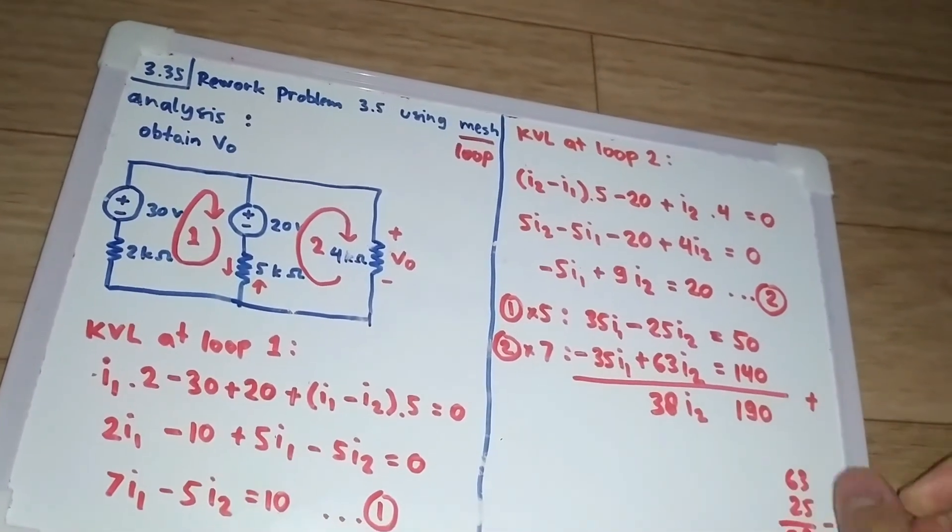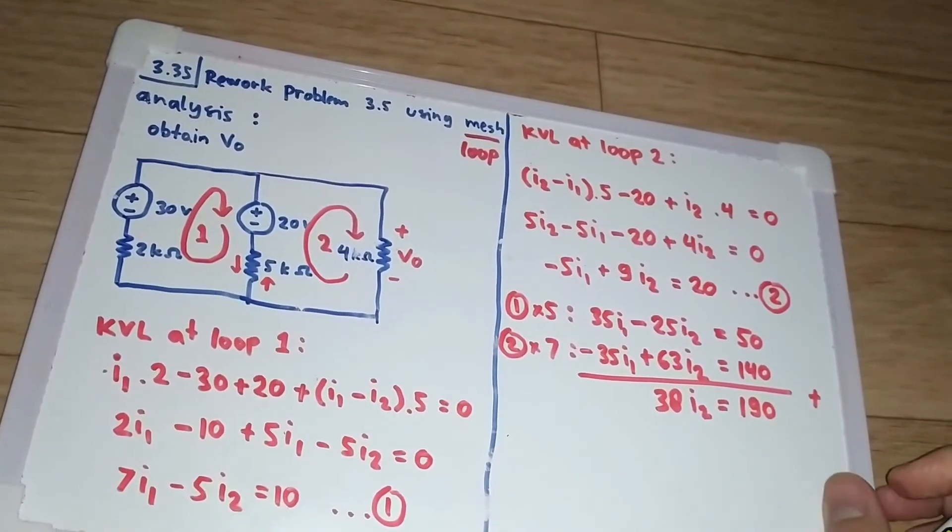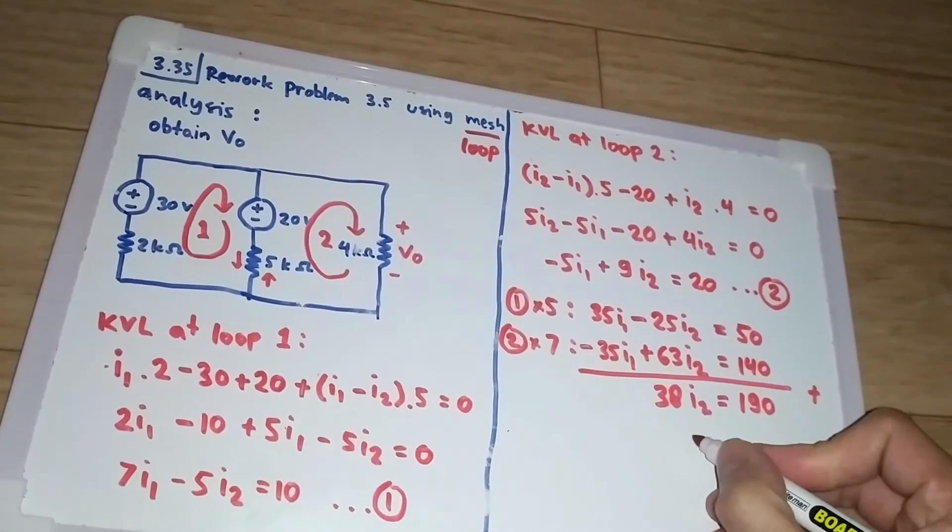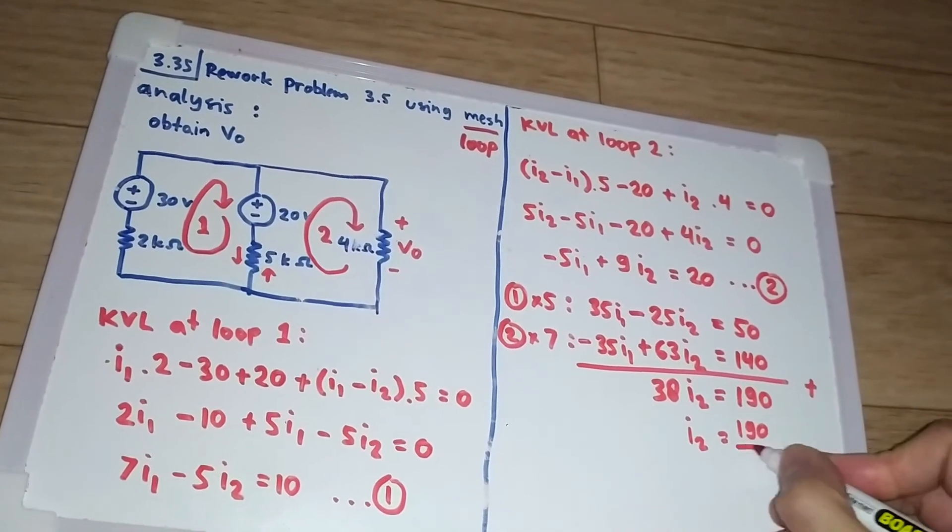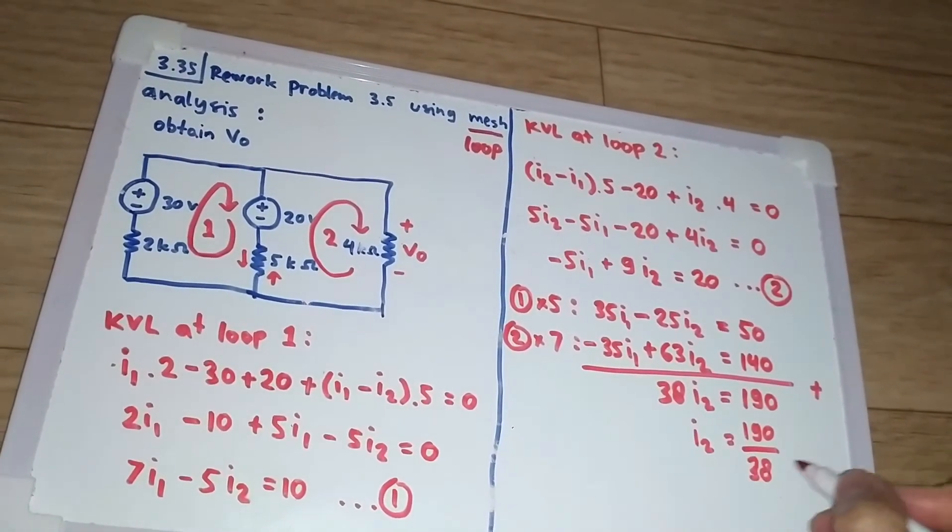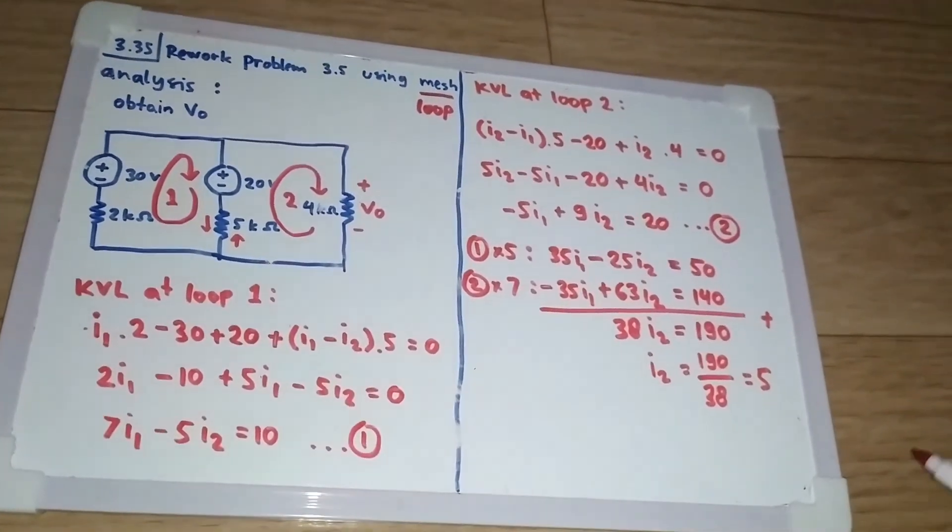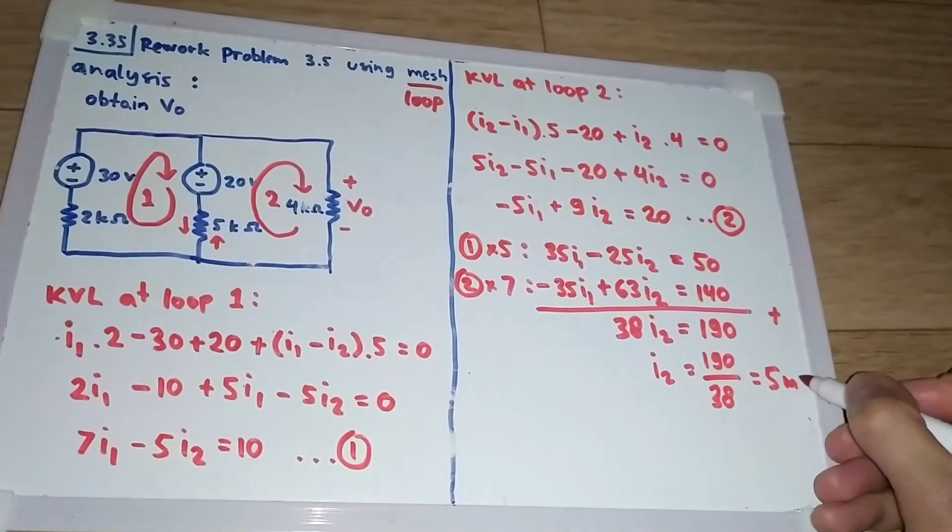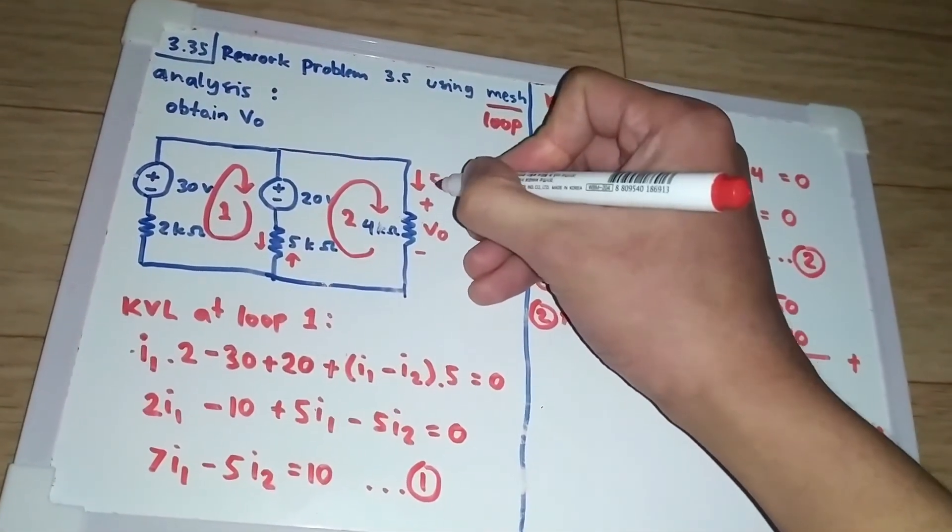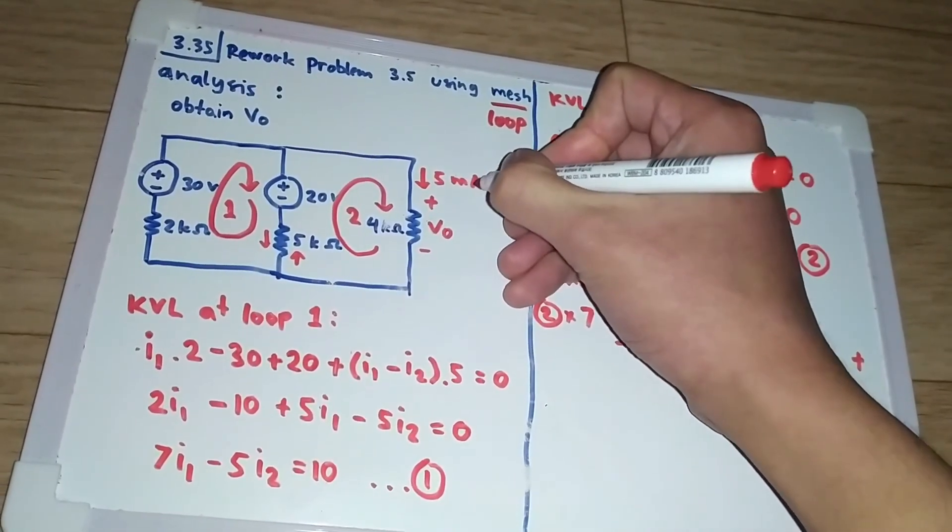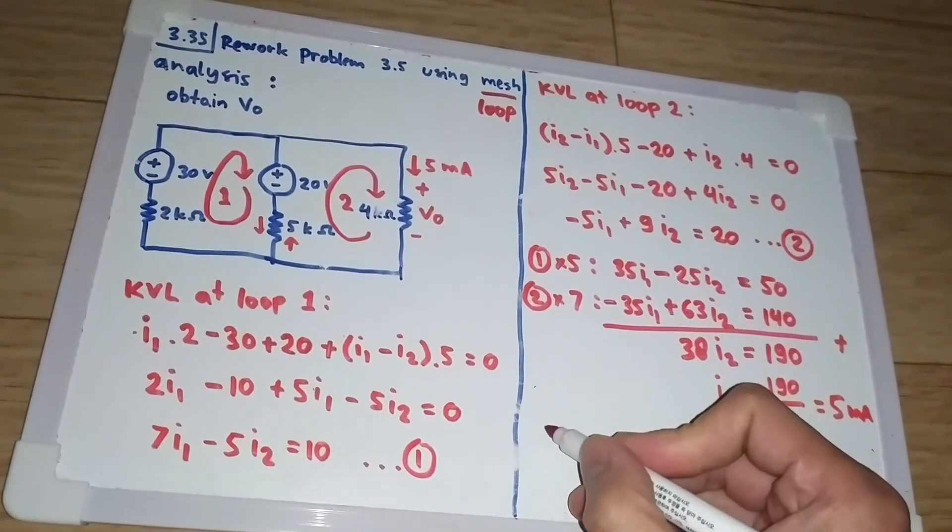And for this one, 63 minus 25 is 38. 38 I2 equals 190, so we get I2 equals this value over 38, which is 5. So I2 is 5 milliamperes. The current here is 5 milliamps, but that is not what we are asked to find. We are asked to find v0.